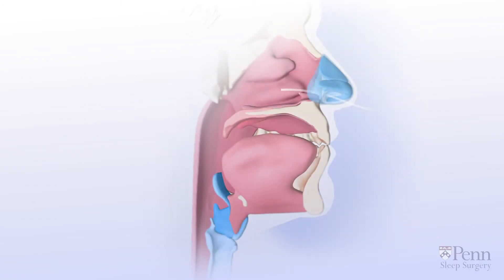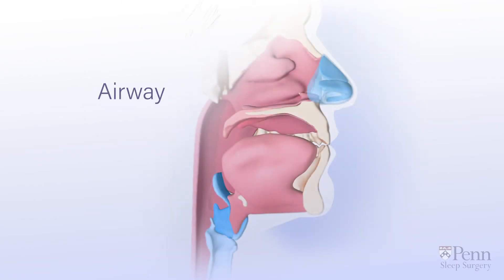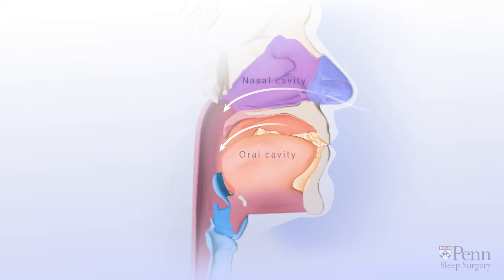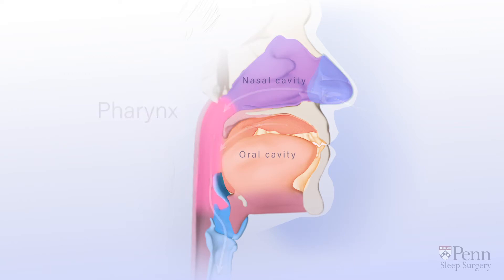The path that air takes when you breathe is called the airway. Air enters through the nasal cavity, or the oral cavity, and then passes through the throat, also called the pharynx. When you sleep, you should be breathing through your nose.